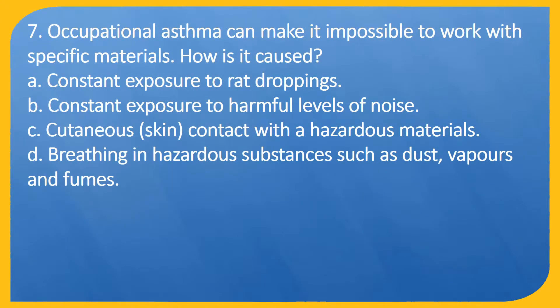Question 7. Occupational asthma can make it impossible to work with specific materials. How is it caused? A. Constant exposure to rat droppings. B. Constant exposure to harmful levels of noise. C. Cutaneous (skin) contact with hazardous materials. D. Breathing in hazardous substances such as dust, vapors and fumes.